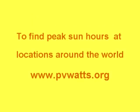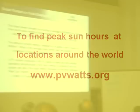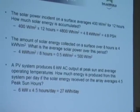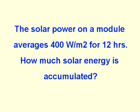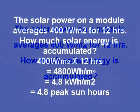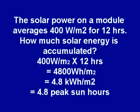You can find a link at www.pvwatts.org. Here are some sample calculations showing how to use the estimated amount of insolation to calculate the power output from a PV array. If the solar power on a module averages 400 watts per meter squared for twelve hours, multiply 400 watts per meter squared times twelve hours of sun, which equals 4800 watt hours per meter squared. Dividing by 1000 gives you 4.8 kilowatt hours per meter squared — and 4.8 is also the number of peak sun hours.